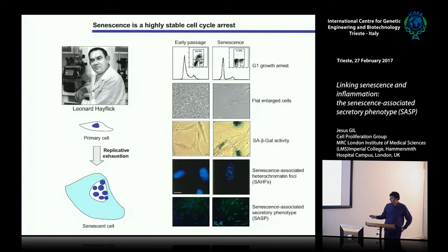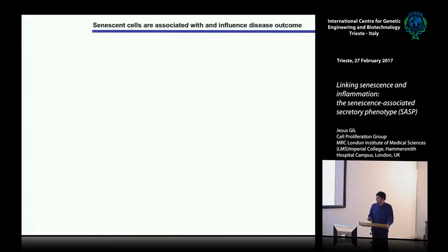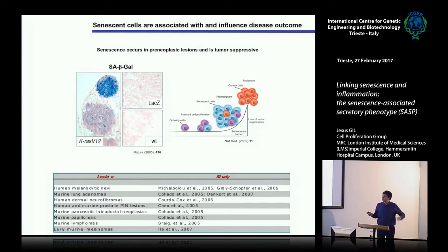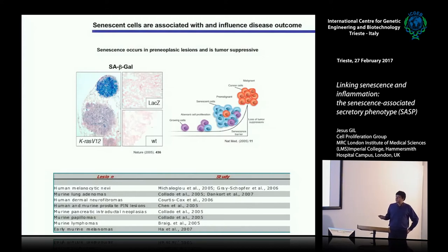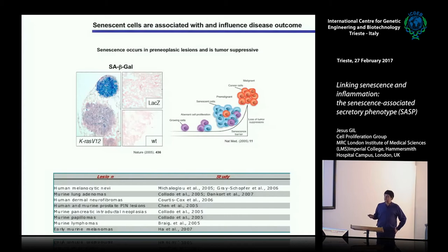It was known for quite a while that senescent cells secrete a lot of mainly pro-inflammatory factors in what is known as the senescence-associated secretory phenotype, or SASP — something that is very interesting and that we have been studying for almost a decade. A lot of the current interest in senescence started from a study in 1997 showing that oncogenes can trigger senescence, expanded in 2005 with studies showing that this oncogene-induced senescent response happens in vivo in preneoplastic lesions.